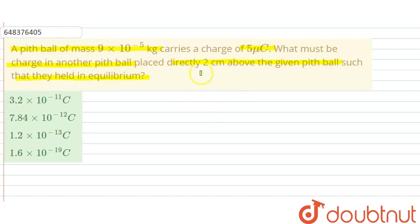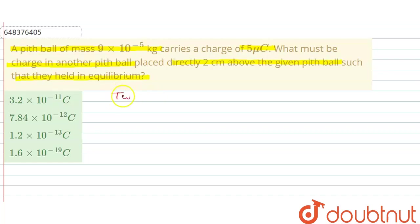That means two pith balls are there: one is of mass 9×10⁻⁵ kg carrying a charge of 5 micro coulomb. Another pith ball is also present 2 cm above the first pith ball, and these two balls are in equilibrium position.